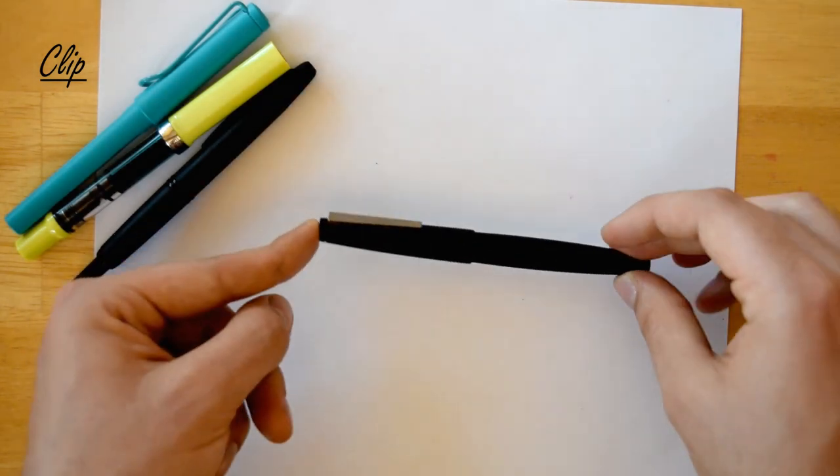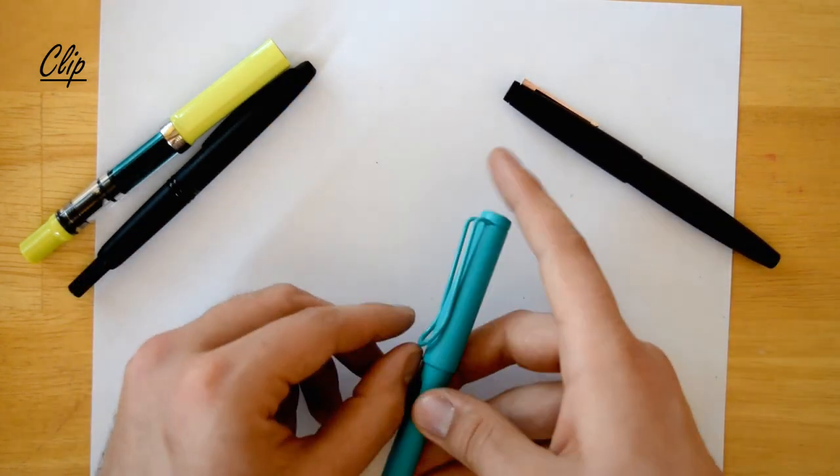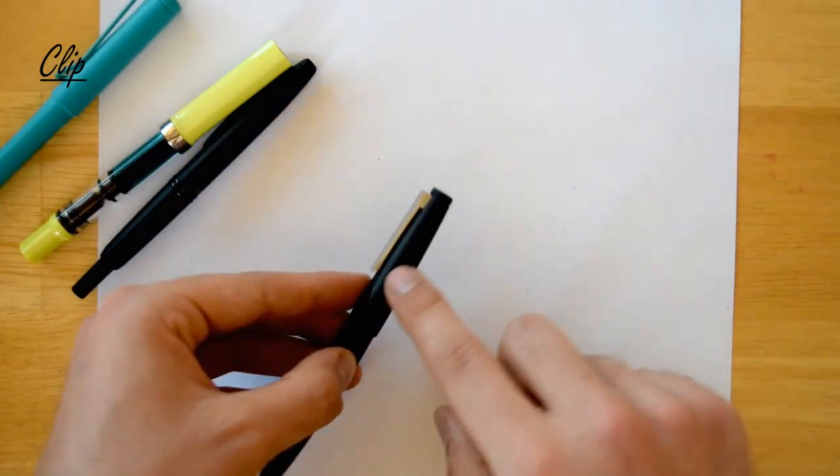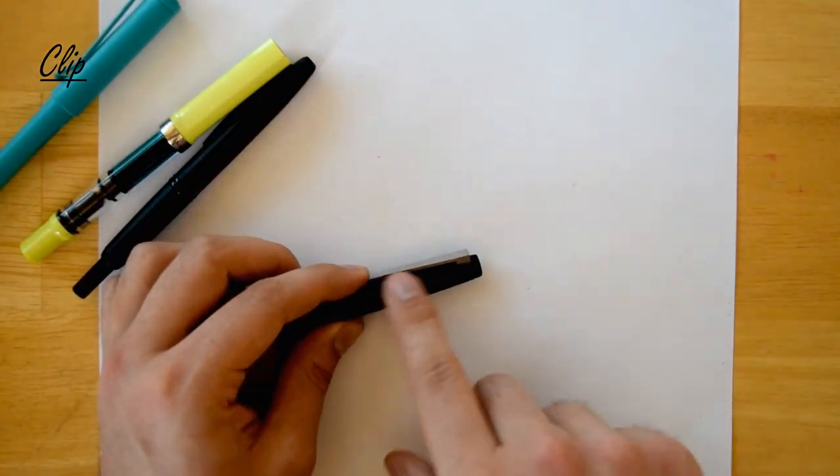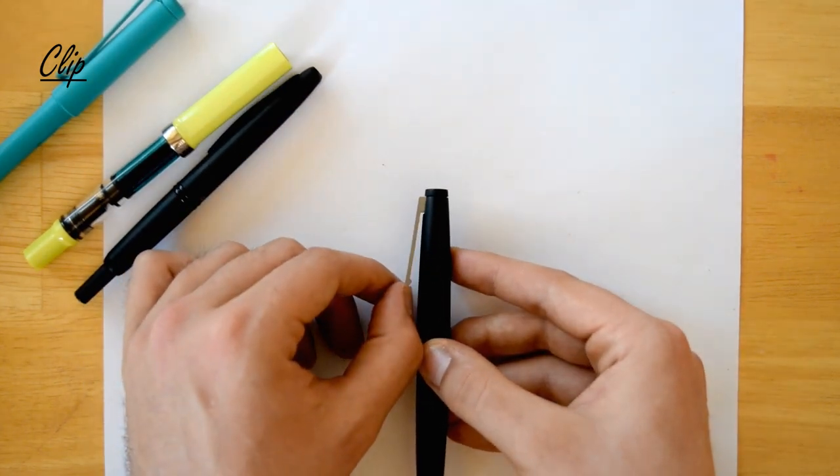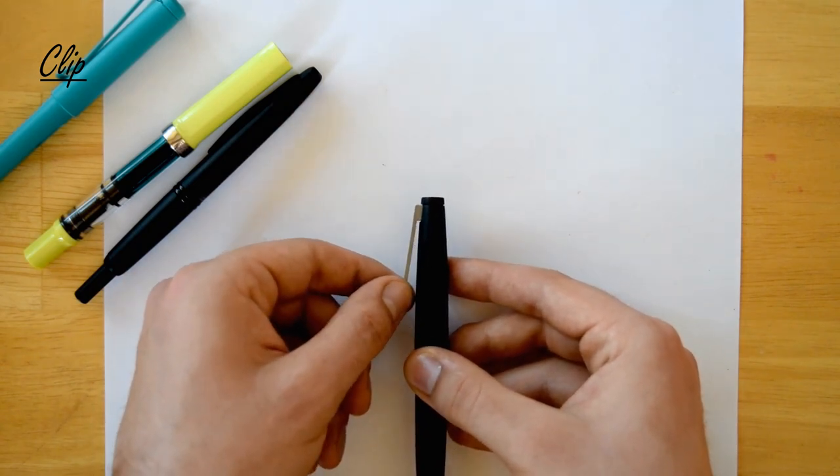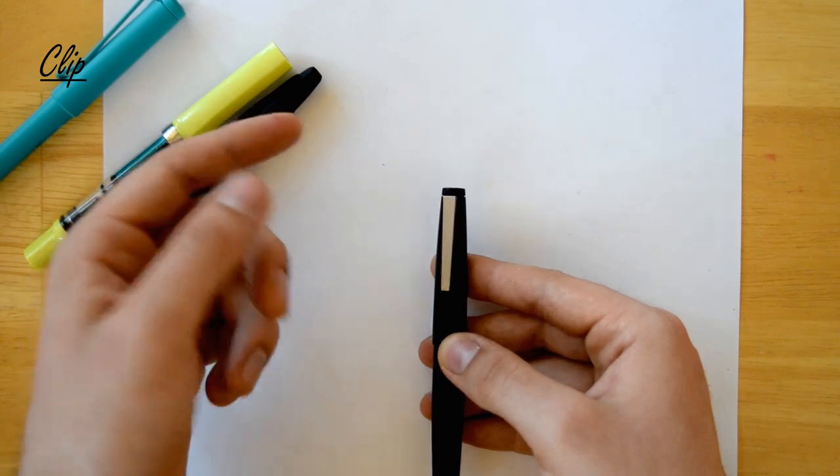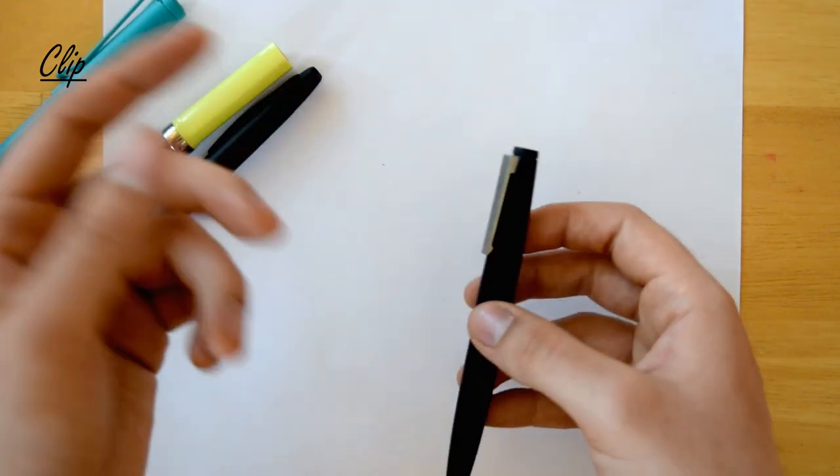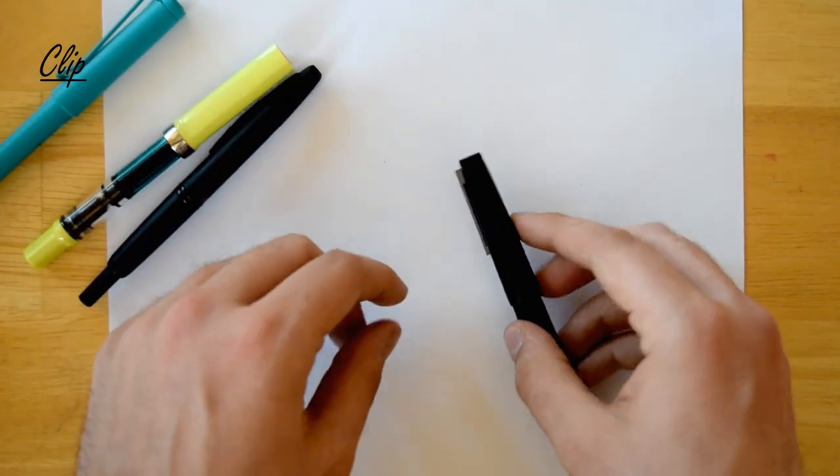Some pens have what are called hinged clips, like this Lamy 2000. So instead of the clip's material bending to allow the movement, what you have is a solid clip - in this case it's stainless steel - and there's a small spring-molded hinge here. So it allows you to operate the clip without bending the material. These types of clips are often found on more expensive fountain pens, but it's not the case - Pelikan and Aurora don't have these - so it's not a universal rule.